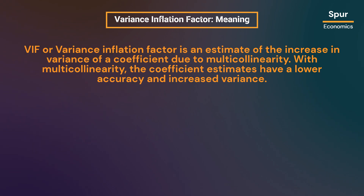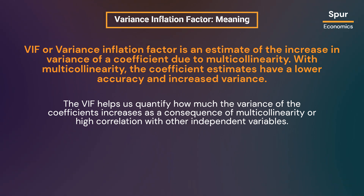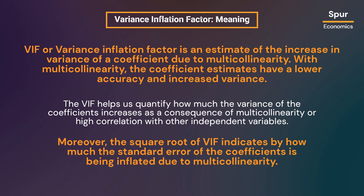VIF, or variance inflation factor, is an estimate of the increase in variance of a coefficient due to multicollinearity. With multicollinearity, the coefficient estimates have lower accuracy and increased variance. The VIF helps us quantify how much the variance of the coefficients increases as a consequence of multicollinearity or high correlation with other independent variables. Moreover, the square root of VIF indicates by how much the standard error of the coefficients is being inflated due to multicollinearity.